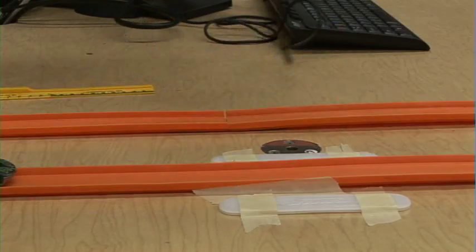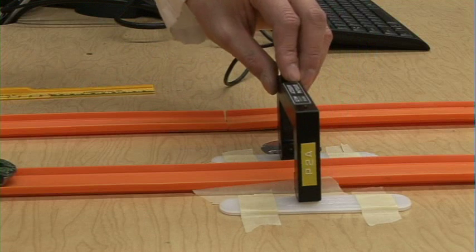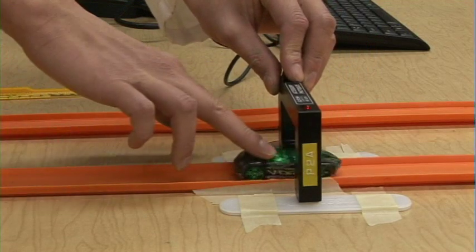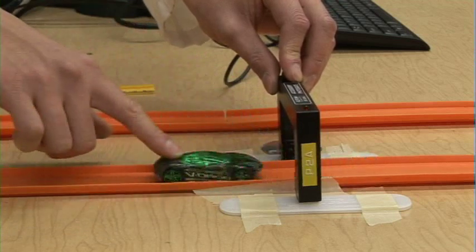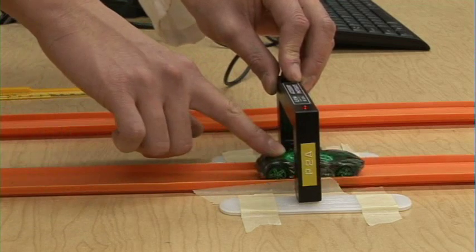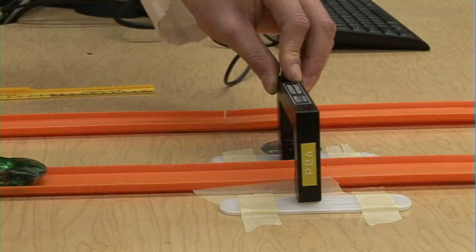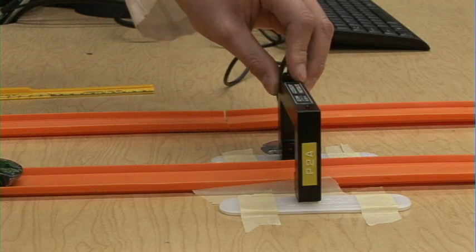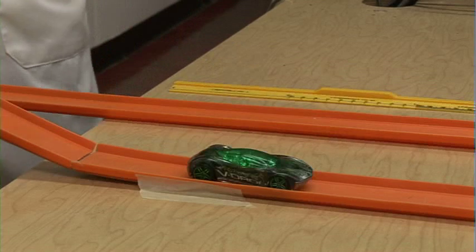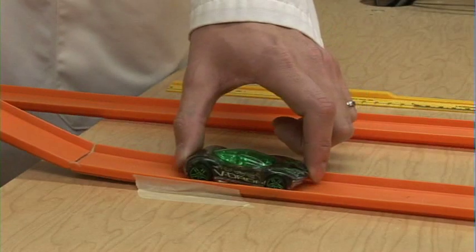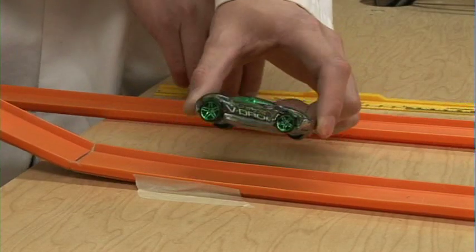To get the speed, we'll be using the photo gate. The photo gate sends a signal to the computer, as you can see here, whenever the car is interrupting the light beam. From that, we can work out how long the light beam has been interrupted for, and from that we can work out its speed. Given the time from the photo gate, we will also have to measure the length of the car that's interrupting the photo gate.